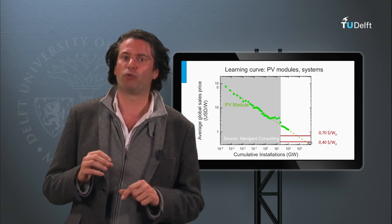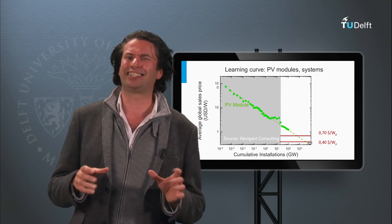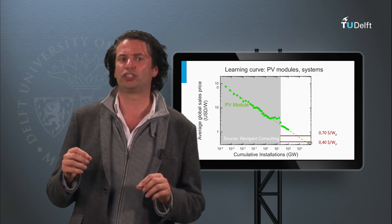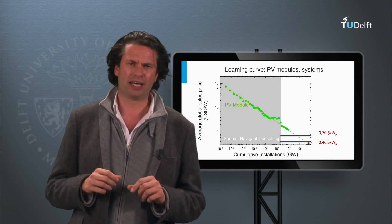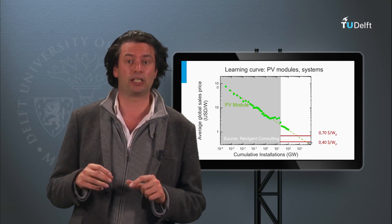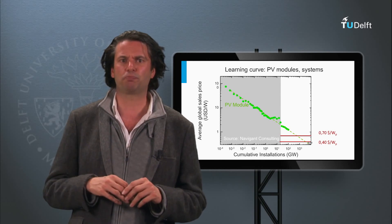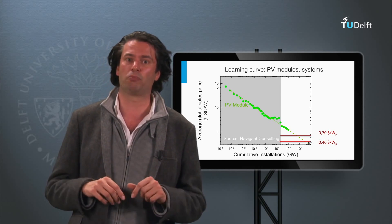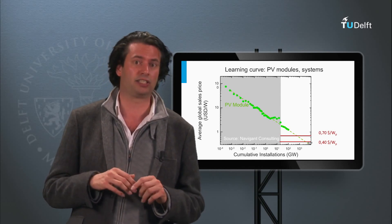The current cost price per watt-peak of the First Solar products is in the order of 68 to 70 dollar cents per watt-peak and is expected to drop to 40 dollar cents per watt-peak in the future, keeping the cost price per watt-peak lower than the solar modules based on crystalline silicon wafers.